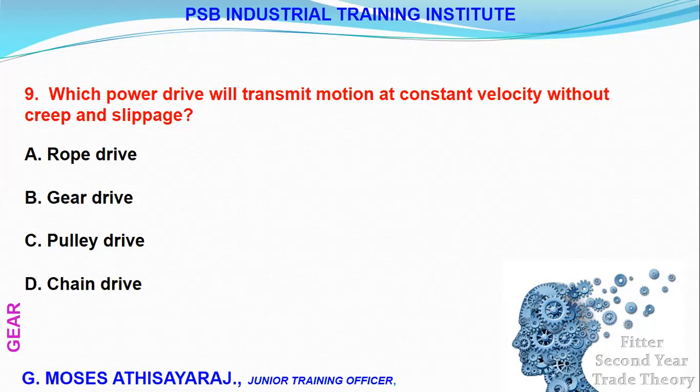In the transmission system, where does slip occur? If we have a power transmission with a rope driver, a pulley driver, and a chain driver, slip occurs in the belt or pulley drive. So the answer is B — the belt drive.